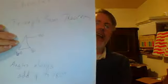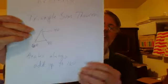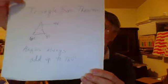The angles always add up to 180 degrees — that's all the angle sum theorem is. The angles of a triangle always add up to 180 degrees, or to put it another way, the sum of the angles of any triangle is 180 degrees. So that's the angle sum theorem for triangles.